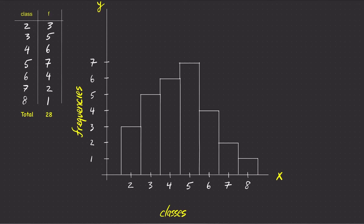A quick glance at the frequency histogram will show us the shape of the data distribution. In this case, notice how the data is almost symmetrical.